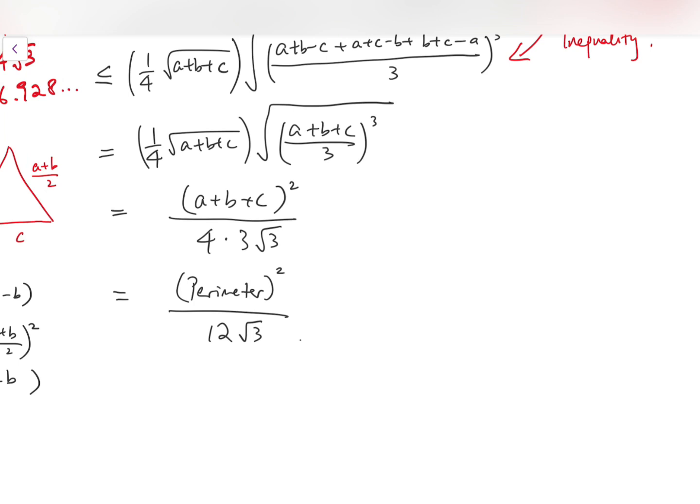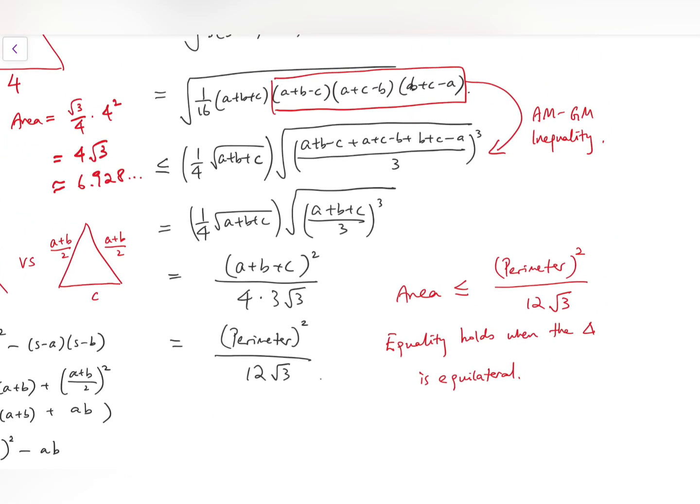Now that means, therefore, we can conclude that for all triangles, we have area to be less than or equal to perimeter squared over 12 times root 3. And equality holds when the triangle is equilateral. This appears because we want these three terms to be equal. And for that to be equal, we must have A equals B equals C.